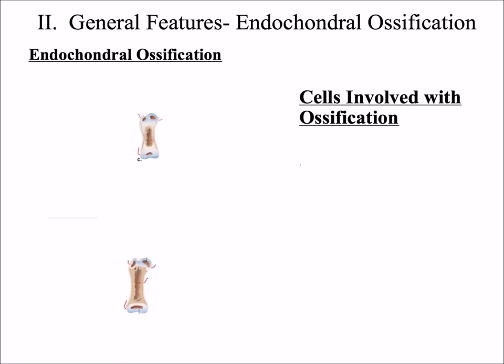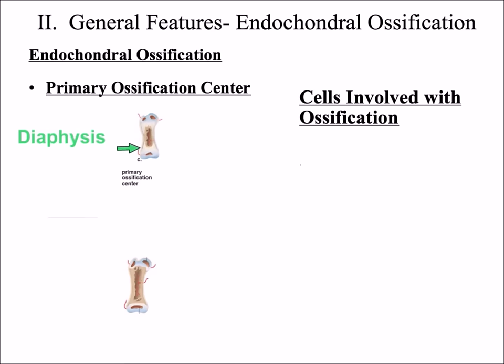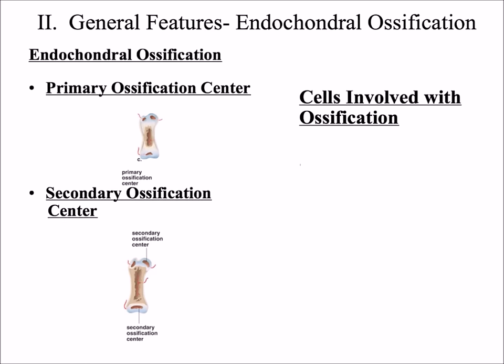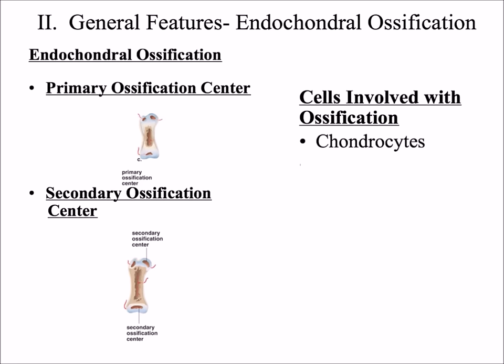The second type of bone formation is called endochondral ossification. Before we talk about the process, let's cover a couple of things involved. The first is the primary ossification center. Primary means first, ossification means the process of making bone, and center is just the location. The primary ossification center is located in the diaphysis of a long bone. The secondary ossification center — the second area where bone is formed — will be located in the epiphyses of long bones. Cells involved include chondrocytes, which are mature cartilage cells that maintain cartilage.